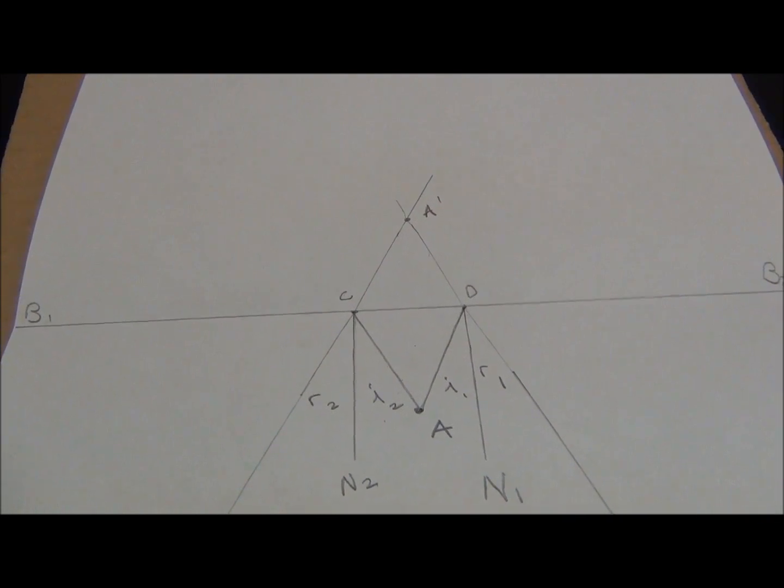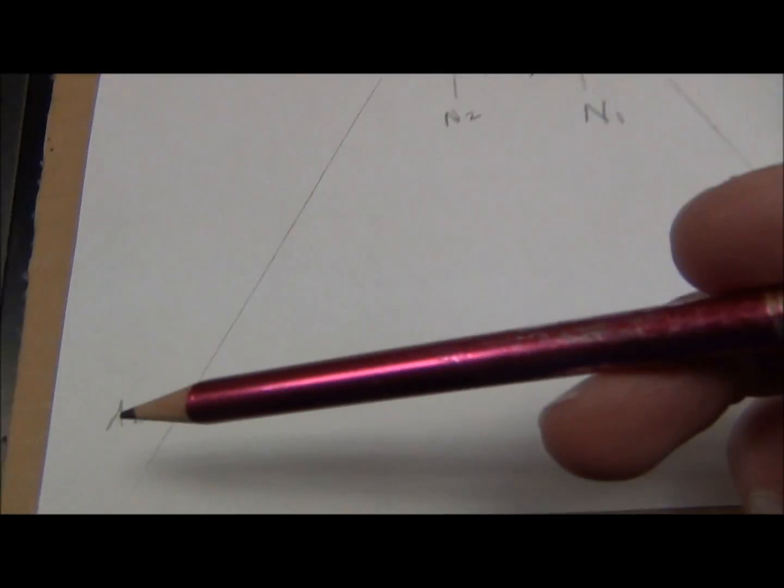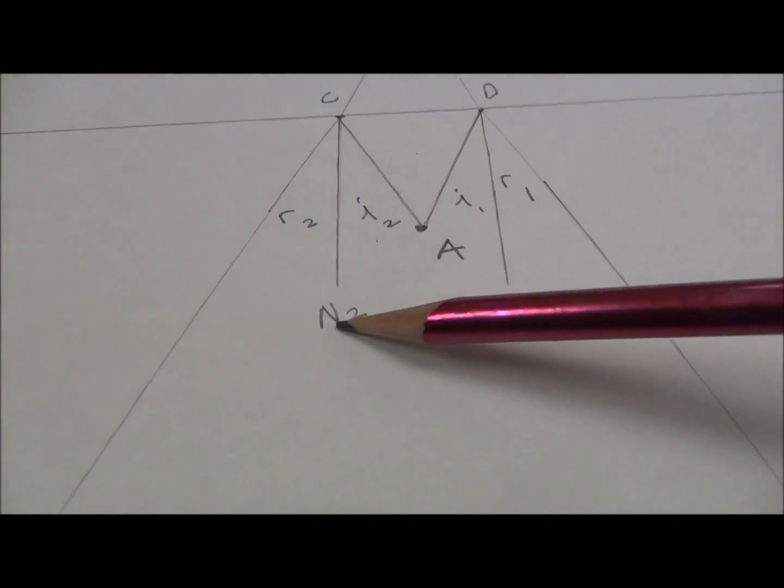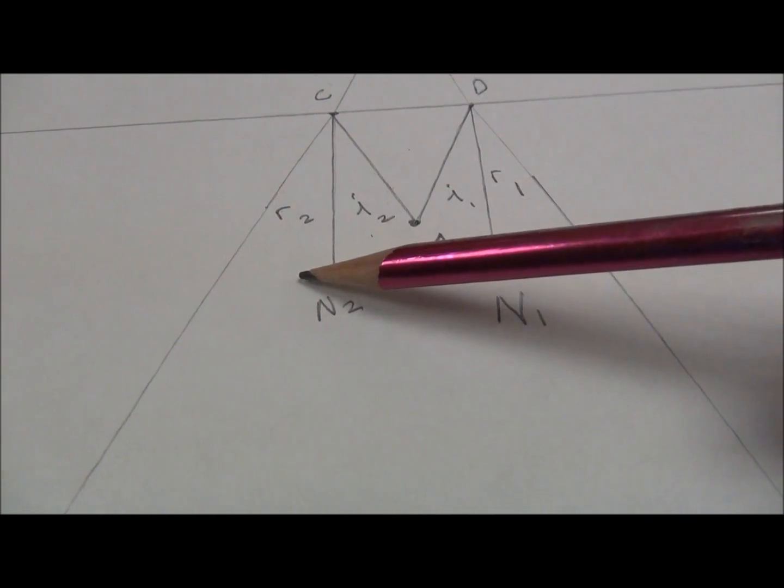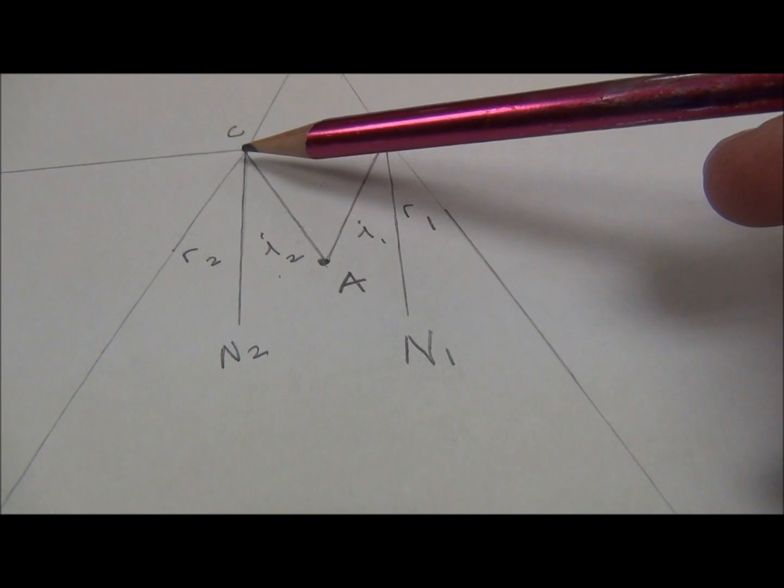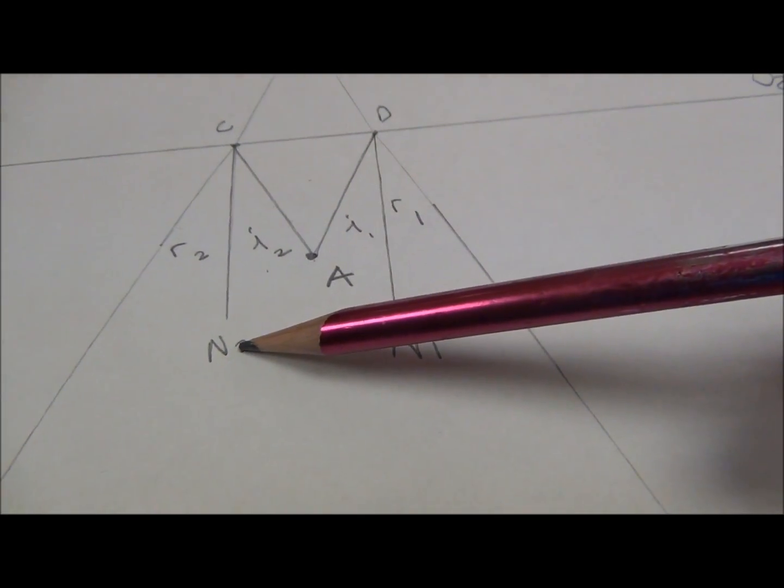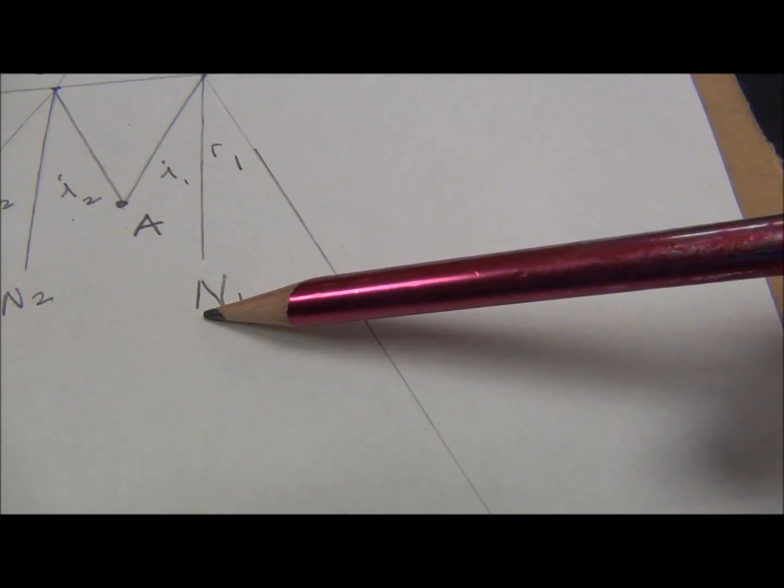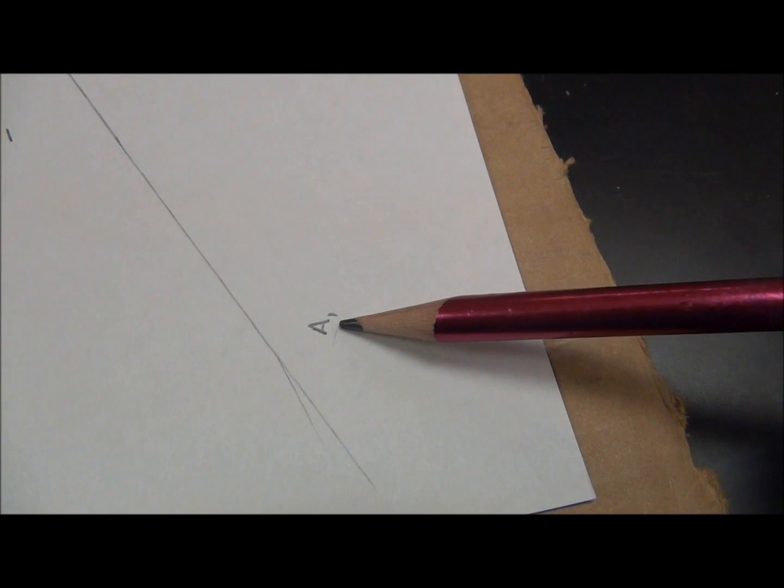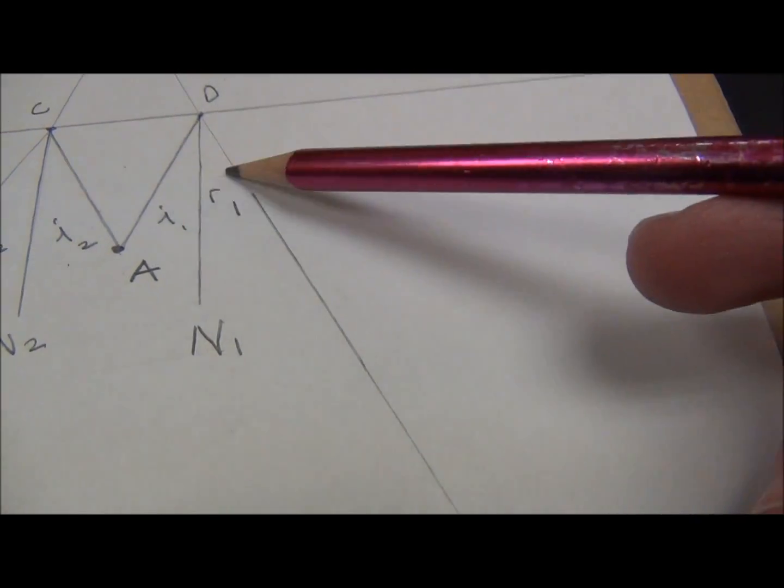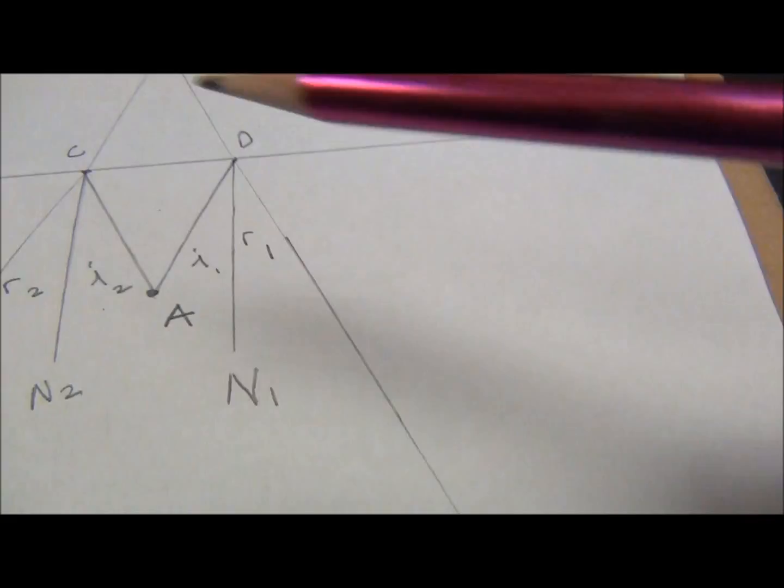Or actually, this is a reflected ray. My angle will be A2, C, N2. Another angle that I have will be A, C, N2. I have A, D, N1. And I have A1, D, N2. We need to measure each of these angles with a protractor.